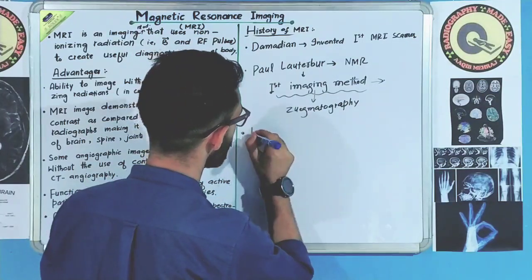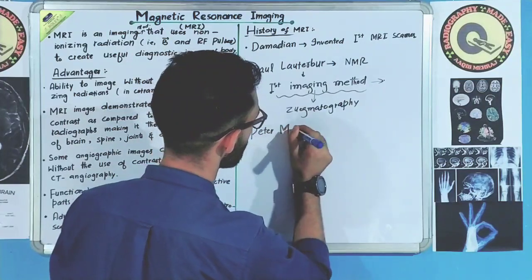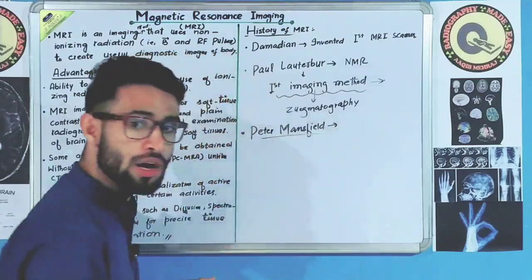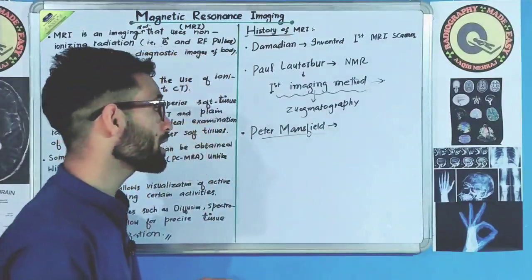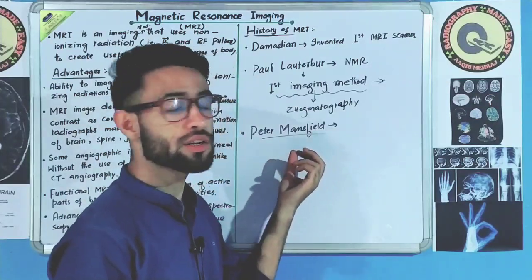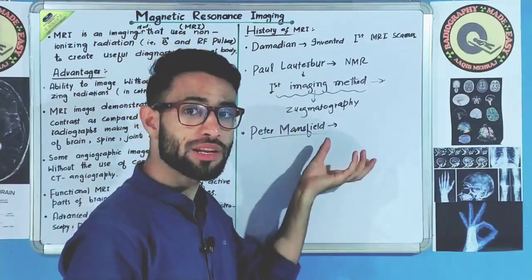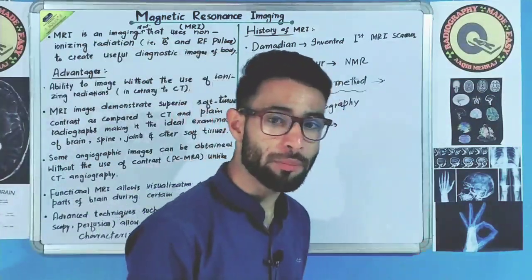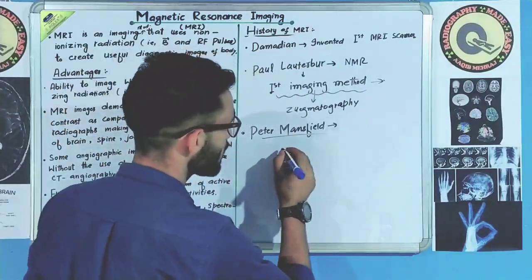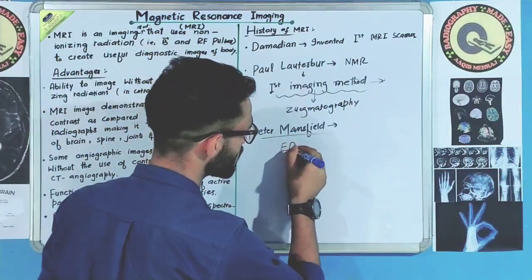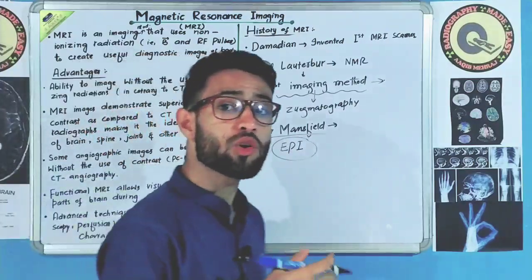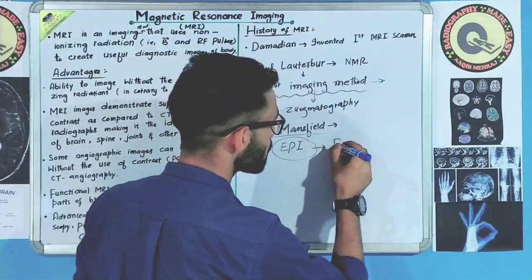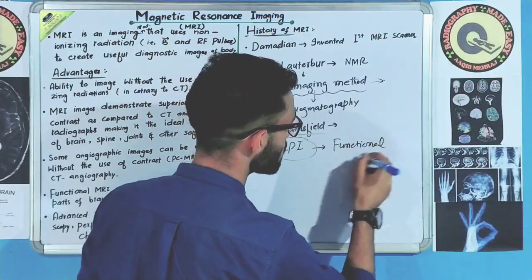After Lauterbur, another scientist named Peter Mansfield was also engaged in similar research in the NMR field. Peter Mansfield developed echo planar imaging — EPI — which is used today in functional neuroimaging.